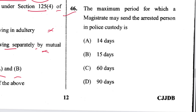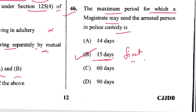Question 46: The maximum period for which a magistrate may send an arrested person to police custody is 15 days — and that is only the first 15 days from the date of arrest or first appearance before the magistrate. B is the answer.